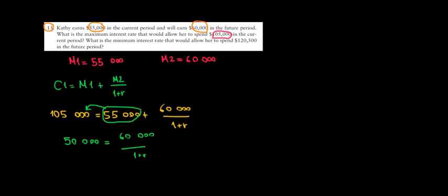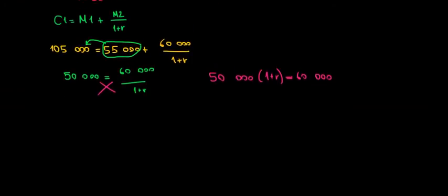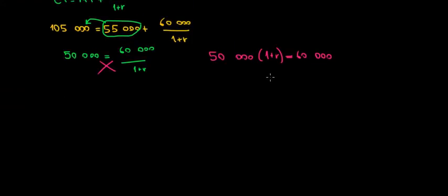We're looking for the interest rate. So we could do some cross product here, which means we will have $50,000 times one plus r equals to $60,000. Now we should leave only one plus r on one side so we can get to that interest rate value. One plus r is equal to $60,000 divided by $50,000. What's $60,000 divided by $50,000? That's equal to 1.2.